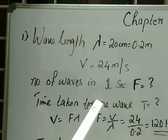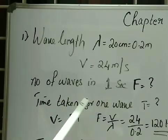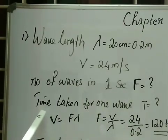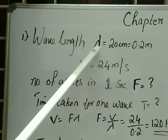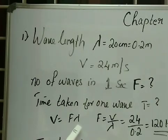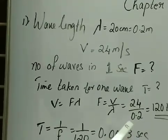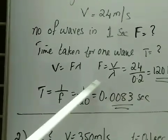If the wave velocity is 24 m/s, calculate the number of waves produced in 1 second — that is, the frequency. We have the formula V = F·λ, so F = V/λ. Substituting: 24 divided by 0.2 gives the answer 120 hertz. So frequency is 120 Hz.